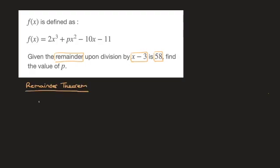tells us that when we divide a polynomial function f(x) by a linear like x minus 3, the remainder is equal to f(3).